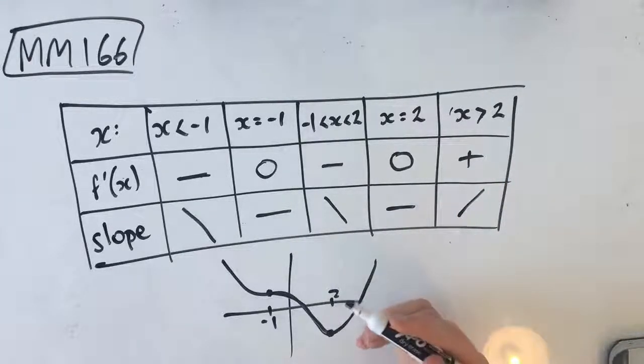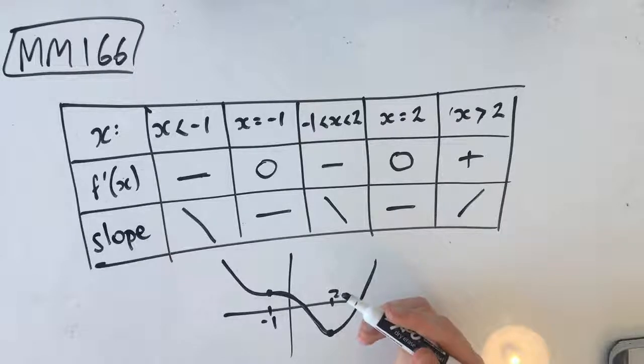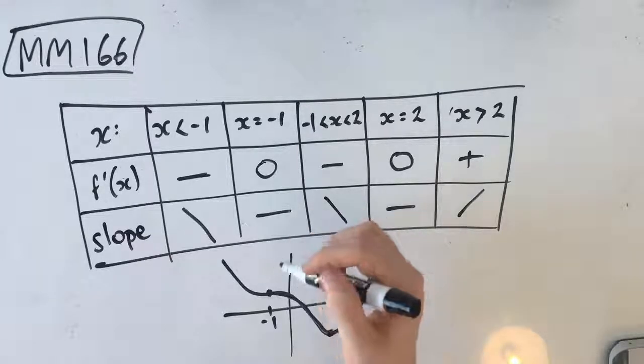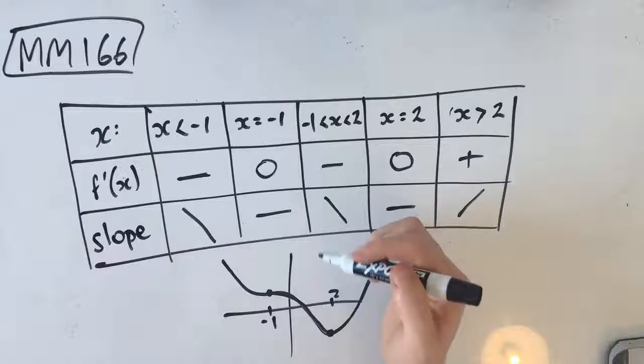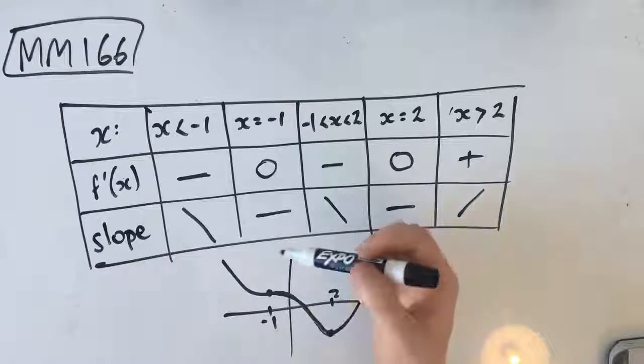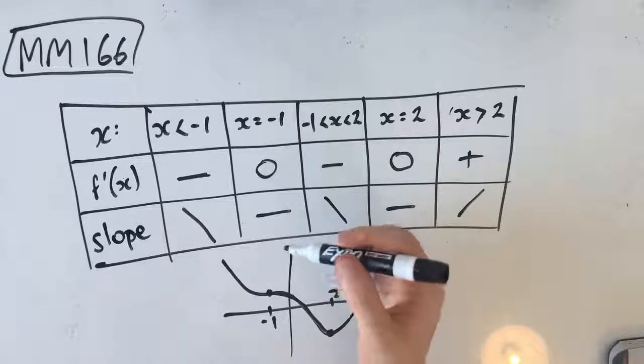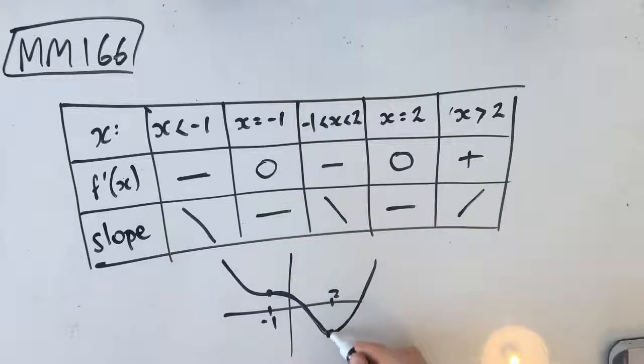So now we need to determine which of the following statements is true. So basically, we just walk through the options. So A tells us the graph has a local maximum point where x equals 2 here. Is this a maximum? No, it's a minimum. So we know that that's not true. So A is out.